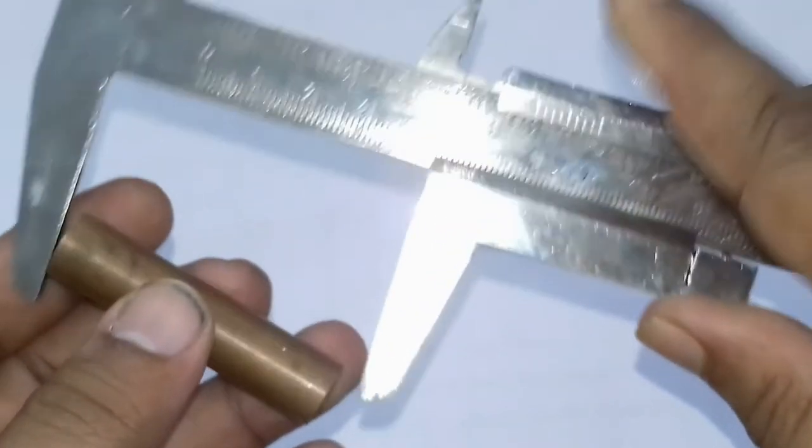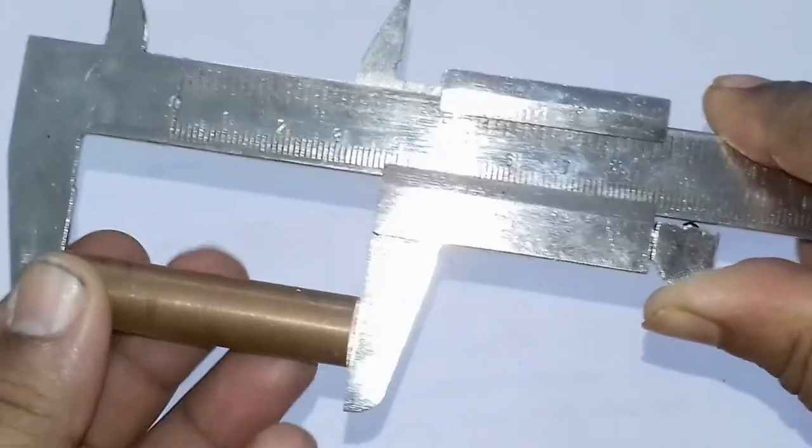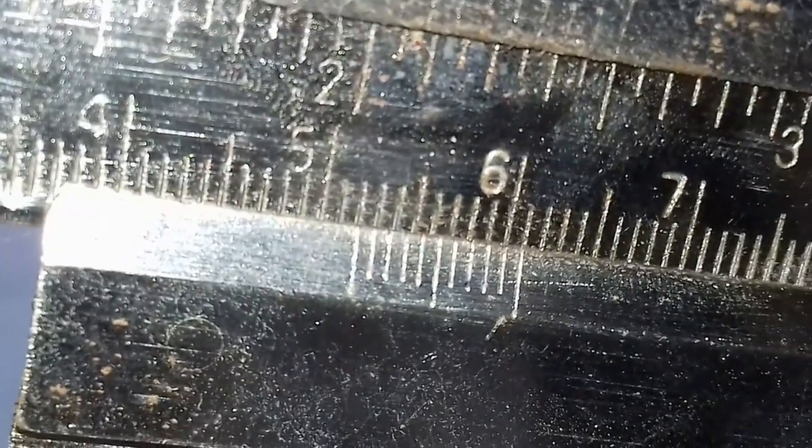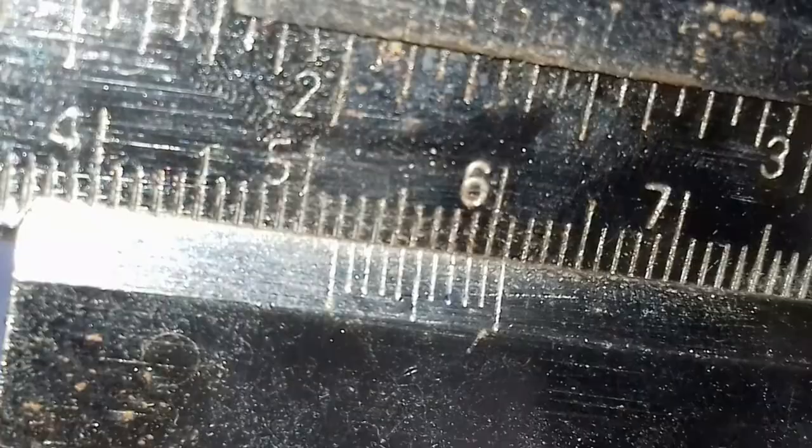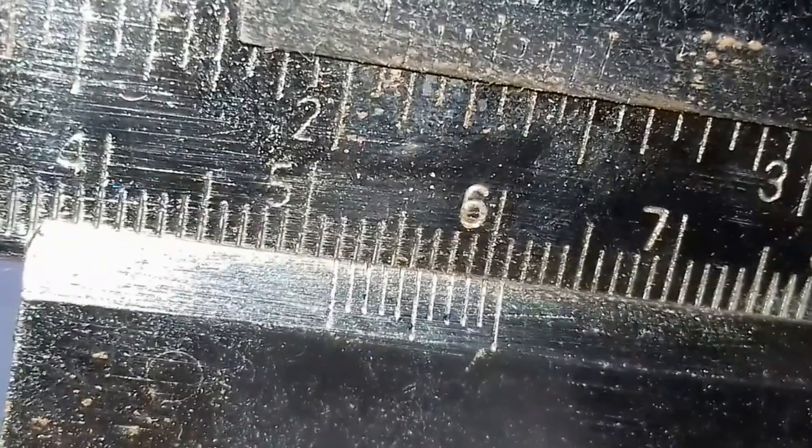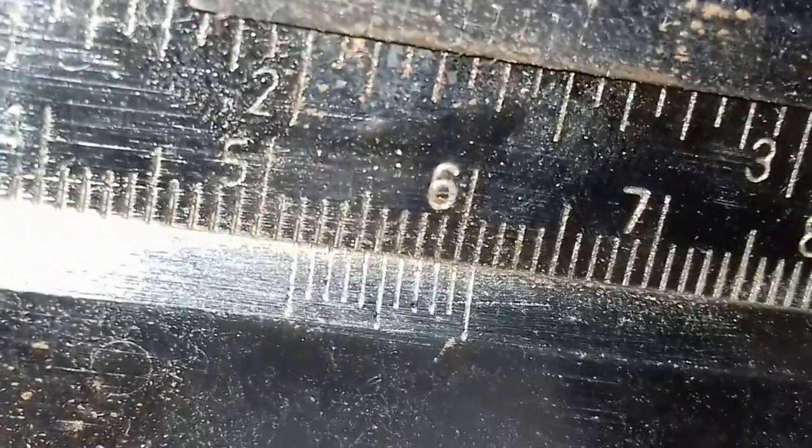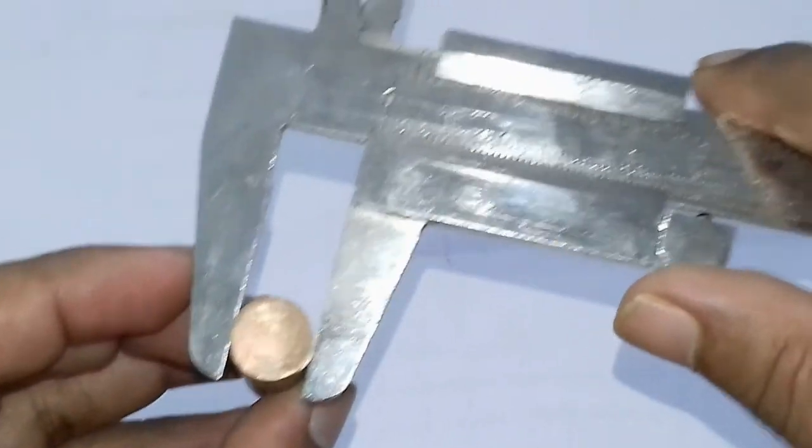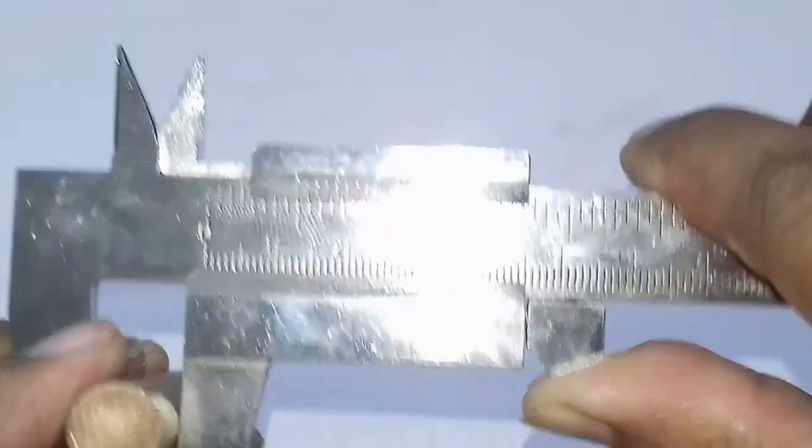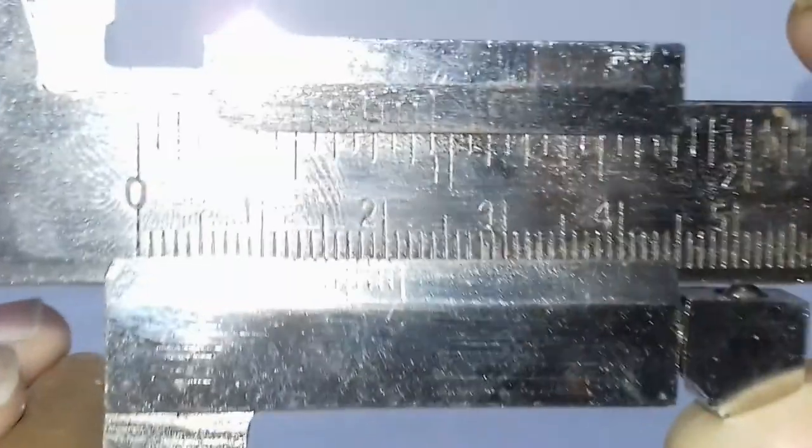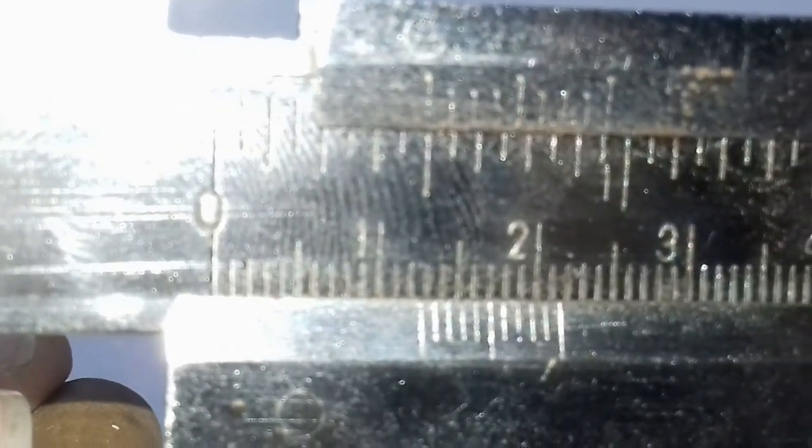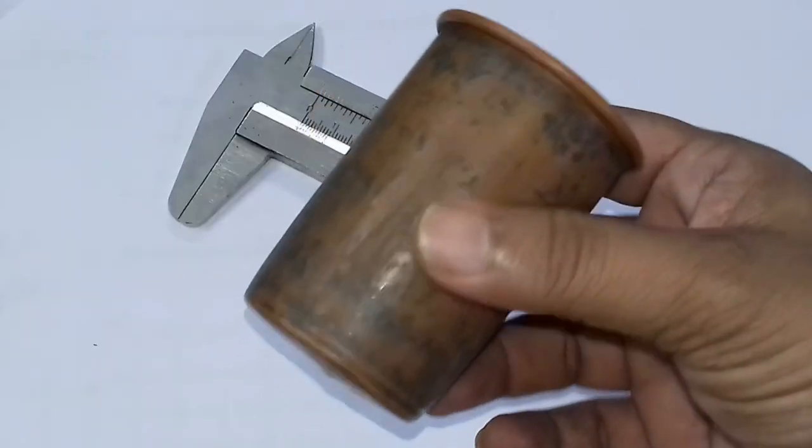And this is how length of the cylinder is taken using the outer jaws of the Vernier calipers. Now, find out MSR and VSR. In the case of cylinder, this is the way we use the outer jaws for measuring diameter of the cylinder.